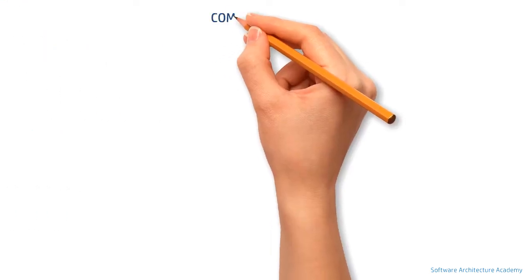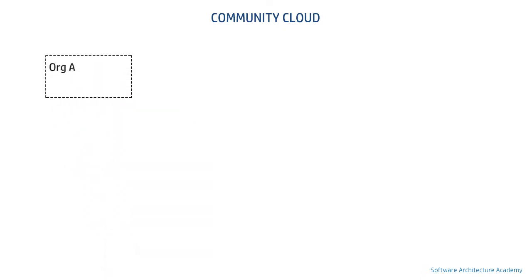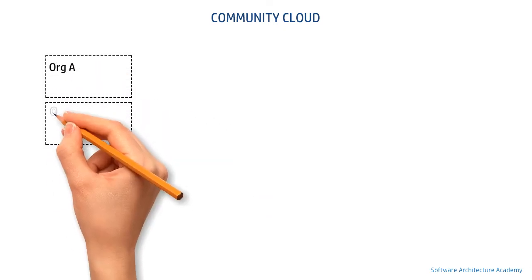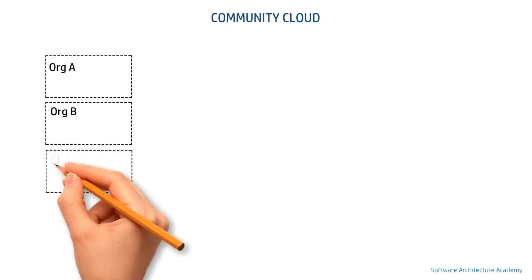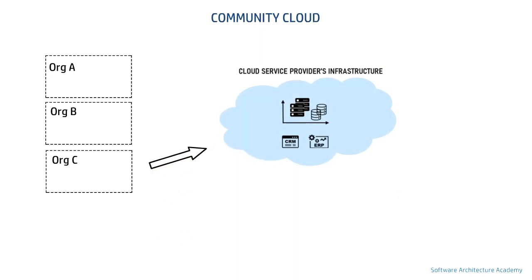The next and final type of deployment model is community cloud — a relatively newer and interesting model. Here, organizations with common requirements and interests share a cloud infrastructure. In terms of hosting and managing, it can be one organization, a combination of organizations, or the cloud service provider itself. An example where this model can work is KYC, which is performed by banks during customer onboarding as well as periodically.